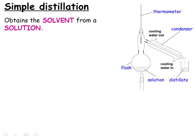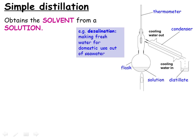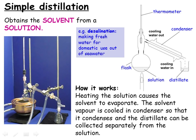Simple distillation is used to obtain the solvent from a solution. The most significant industrial example is the desalination of seawater in desert countries to provide a supply of pure water for drinking and washing. It works because the solution can be heated to the boiling point of the solvent, at which point the solution boils and the solvent molecules become gas. The vapour enters the condenser, where it's cooled to below its boiling point, so it turns back into a liquid, and then it can run through the condenser to be collected. We call the collected liquid the distillate.